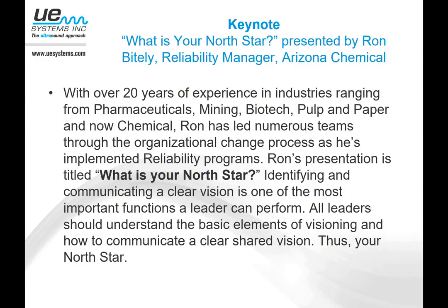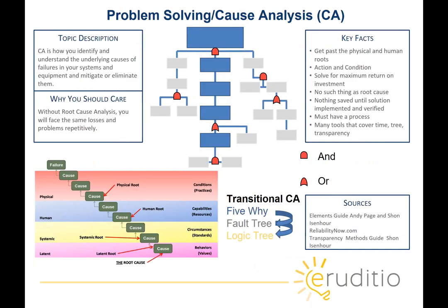In the keynote, Ron Byteley is going to talk about his North Star and what he's doing at Arizona Chemical. That's going to be a great presentation, and I think it will give you something to take back and really figure out for your facility: what is our North Star, what is our vision, where do we want to be in 18 months to two years? The next area is a pre-conference workshop that I will be doing on problem solving. In the next few minutes, I'm going to teach you three of the tools we're going to use.